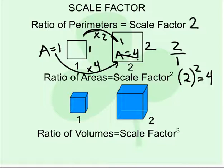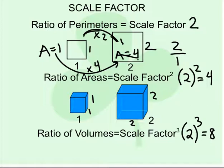Similarly, if we are talking about volumes — a 1 by 1 by 1 cube to a 2 by 2 by 2 cube — the scale factor of the perimeters means we multiply by 2. The surface areas we would multiply by 4. The volumes would be the scale factor 2 cubed, which is 8. The volume of the 1 by 1 by 1 is 1, but the volume of the new 2 by 2 by 2 is 8, meaning I scaled it up 8 times.